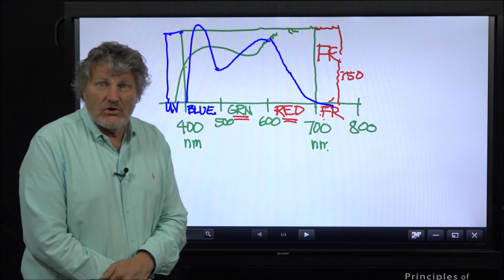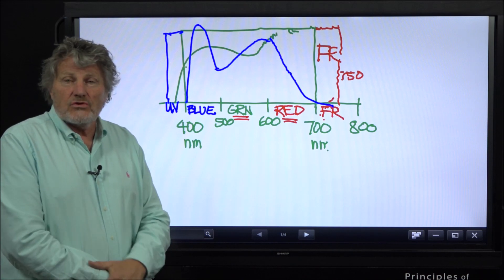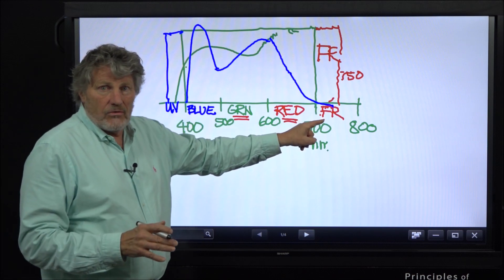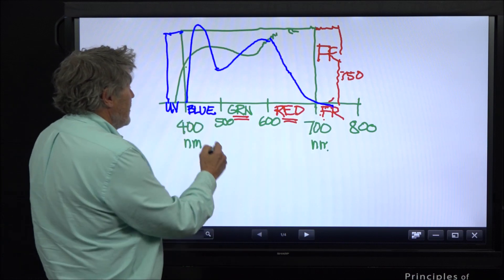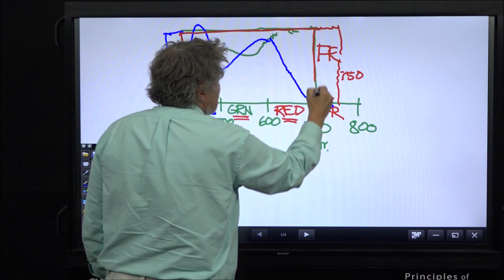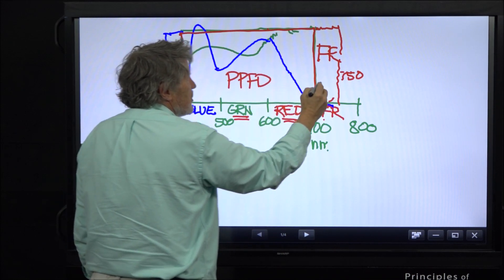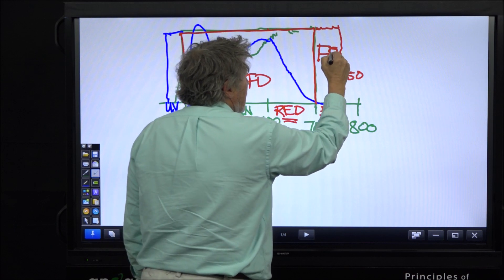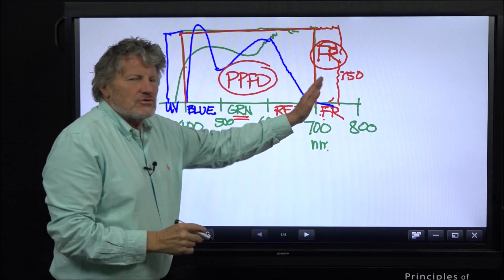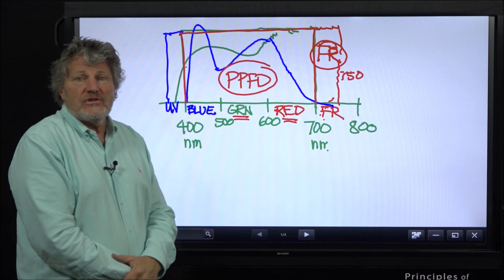This is a concise summary of cutting edge research on light thresholds. Because far red is so powerful, Apogee has developed a sensor that measures separately the PPFD in the standard range and also has a far red detector. It has two detectors in the same sensor so you can tune your growth chamber to optimize for both colors of light.